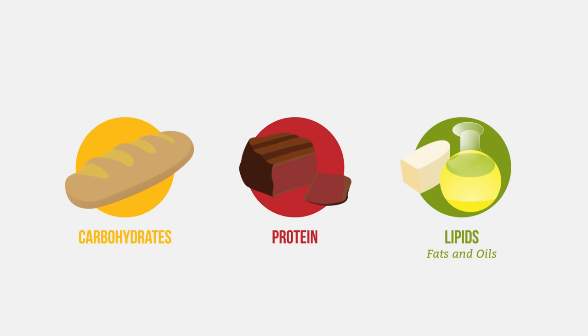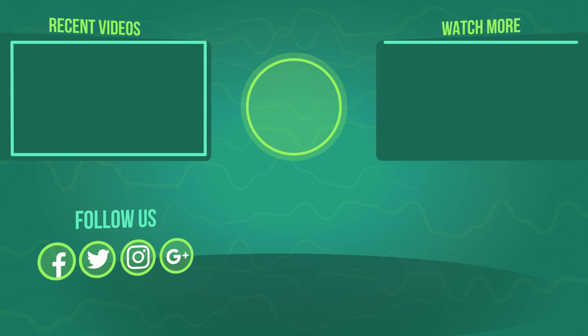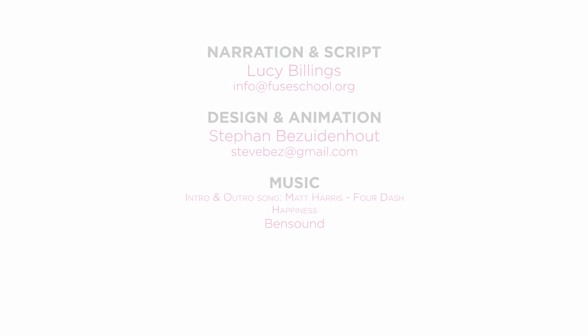So there you have it. The 3 key biological molecules that are essential to living processes: carbohydrates, proteins and lipids. If you liked the video, give it a thumbs up. And don't forget to subscribe. Comment below if you have any questions. Why not check out our Fusco app as well. Until next time.